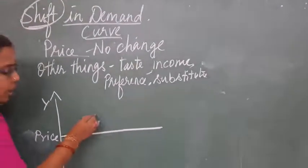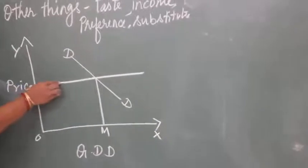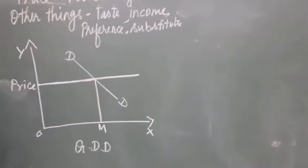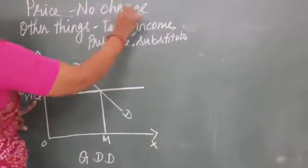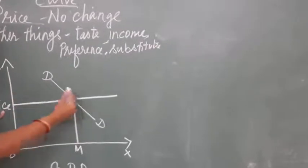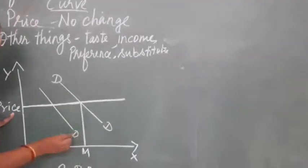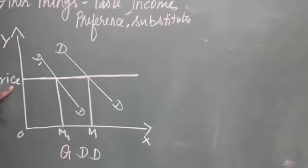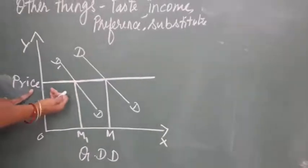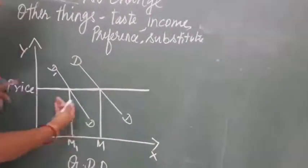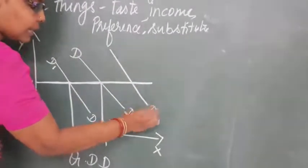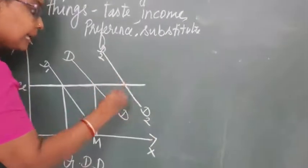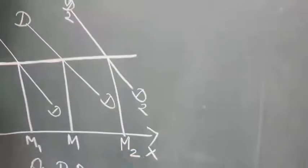D is the demand curve. OM is the quantity demanded. The price is not changed, so it is a horizontal line — perfectly inelastic in price. Because of changes in taste and income, preference and substitute goods, there is a change in the demand curve to D1, where the quantity demanded becomes OM1. This is a leftward shift. It can also move rightward because sometimes demand may increase.